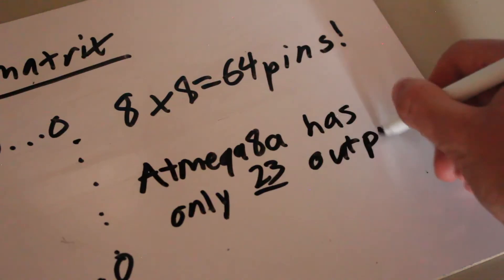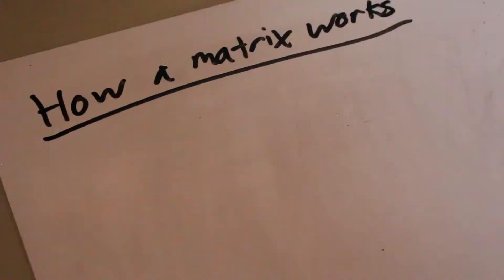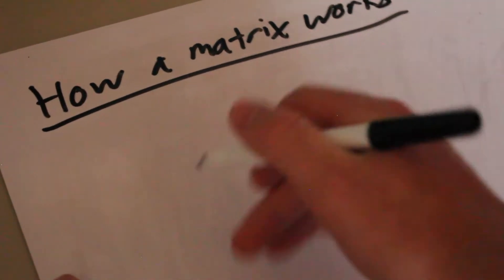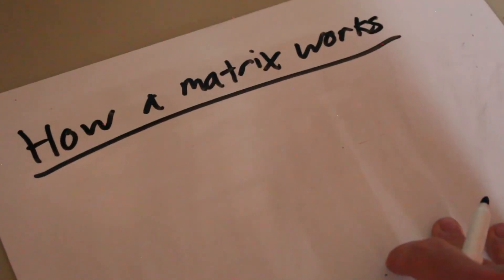That's a lot of pins considering this ATmega8a only has 23 outputs. Now that we explained why we would need a matrix in the first place, let's explain how we would make a matrix.